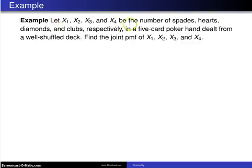Let x1 up to x4 be the number of spades, hearts, diamonds, and clubs, respectively, in a five-card poker hand dealt from a well-shuffled deck.